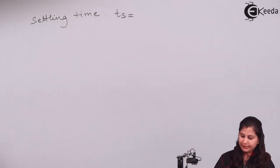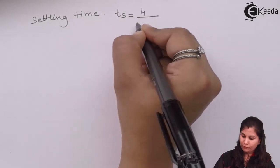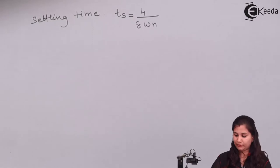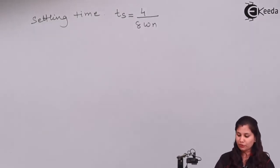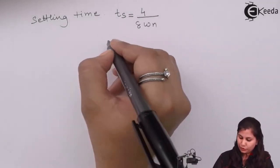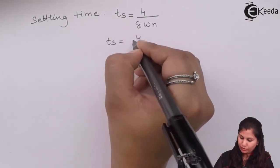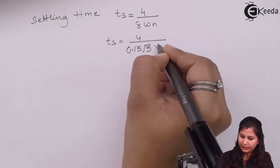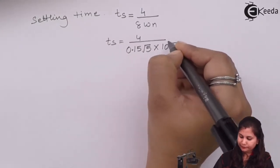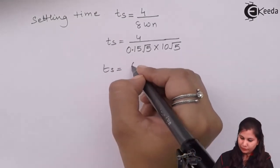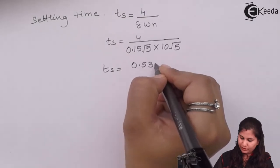The next specification is settling time, represented by ts. For a 2 percent tolerance band, the formula is ts equals 4 upon (δ × ωn). Substituting δ equals 0.15√5 and ωn equals 10√5, the settling time comes out to be 0.533 seconds.